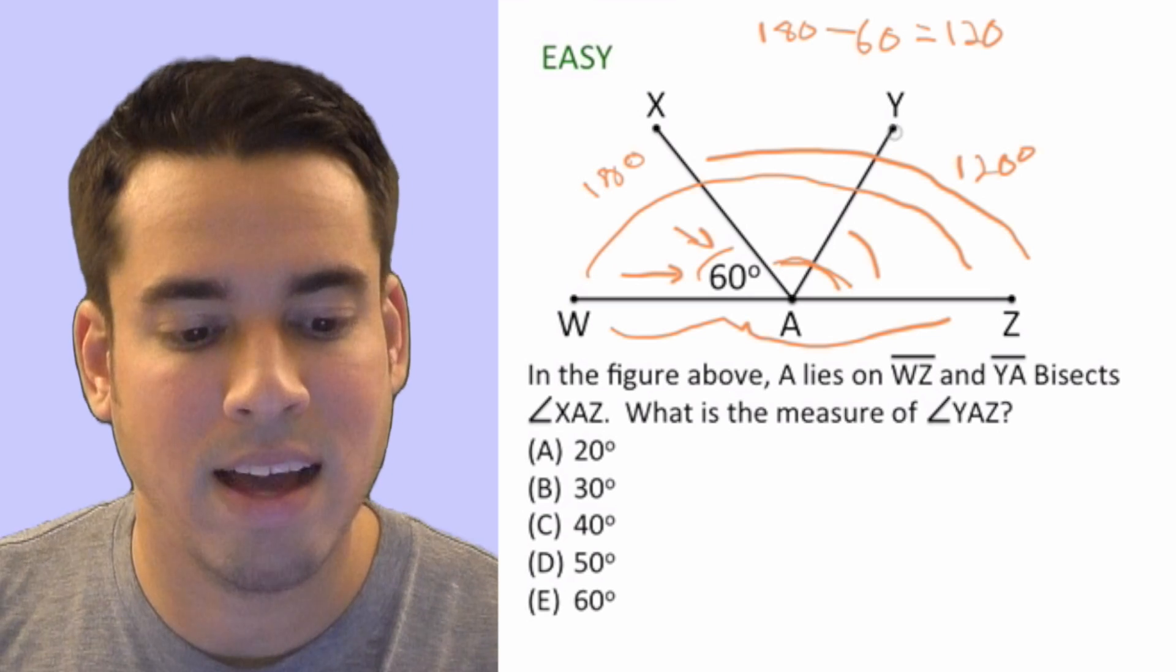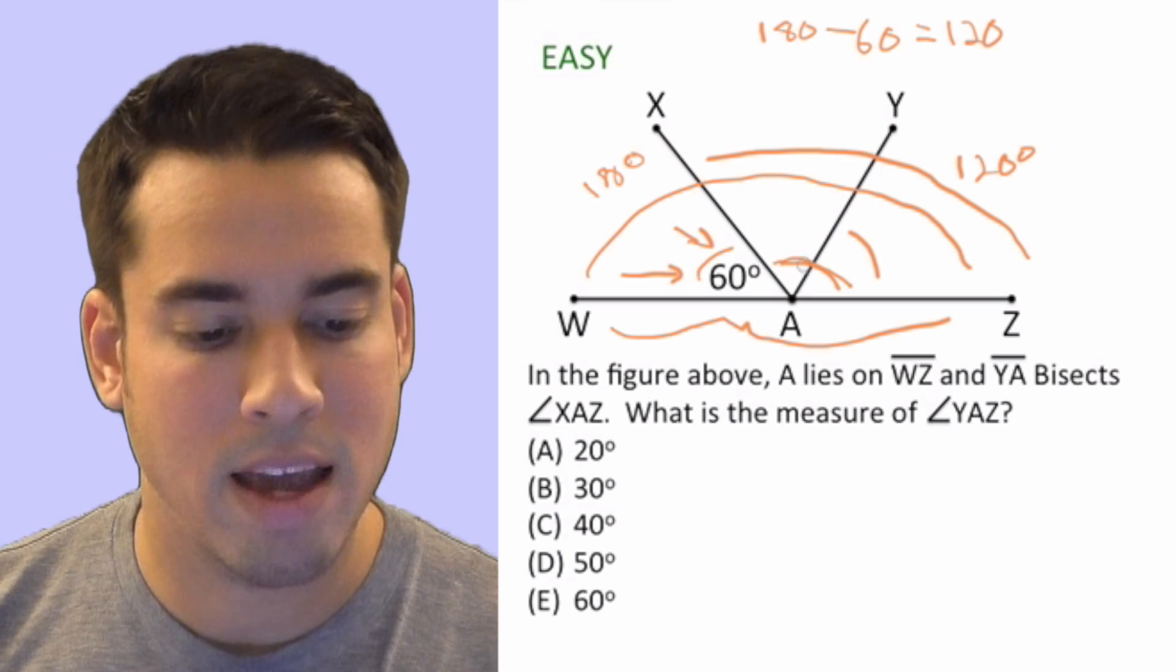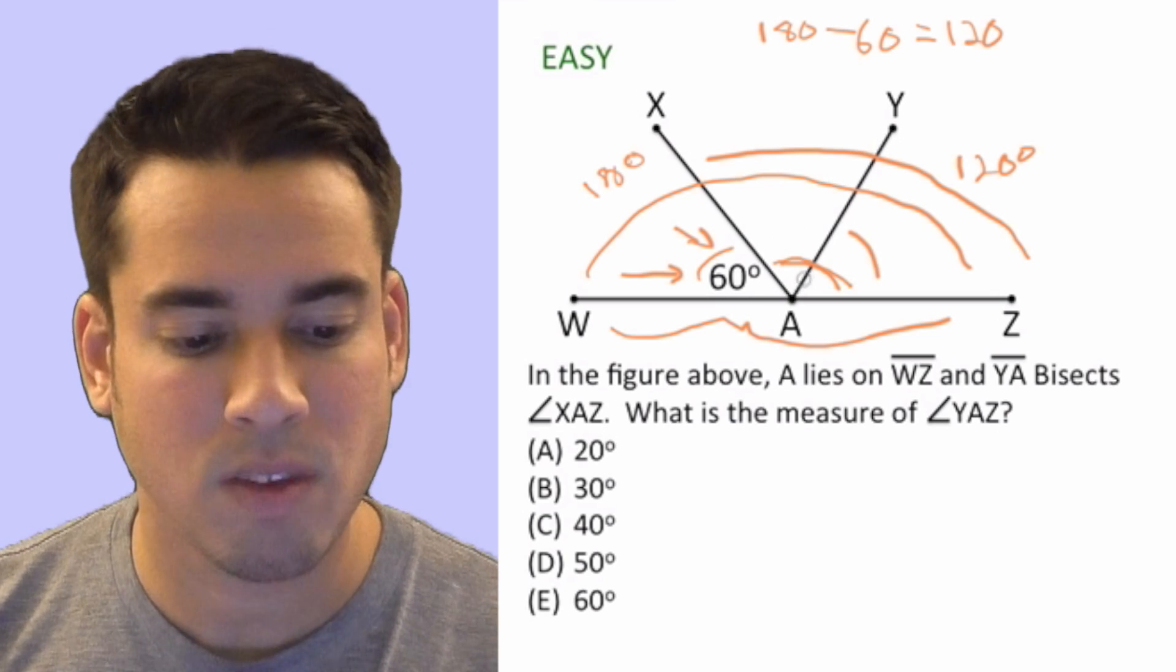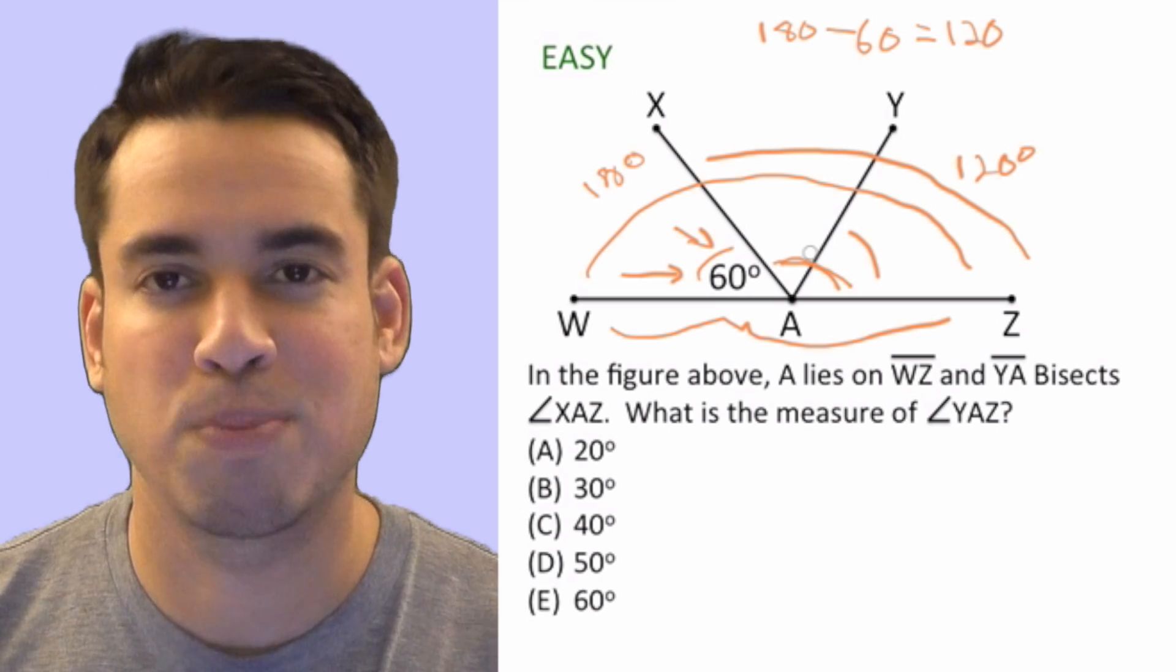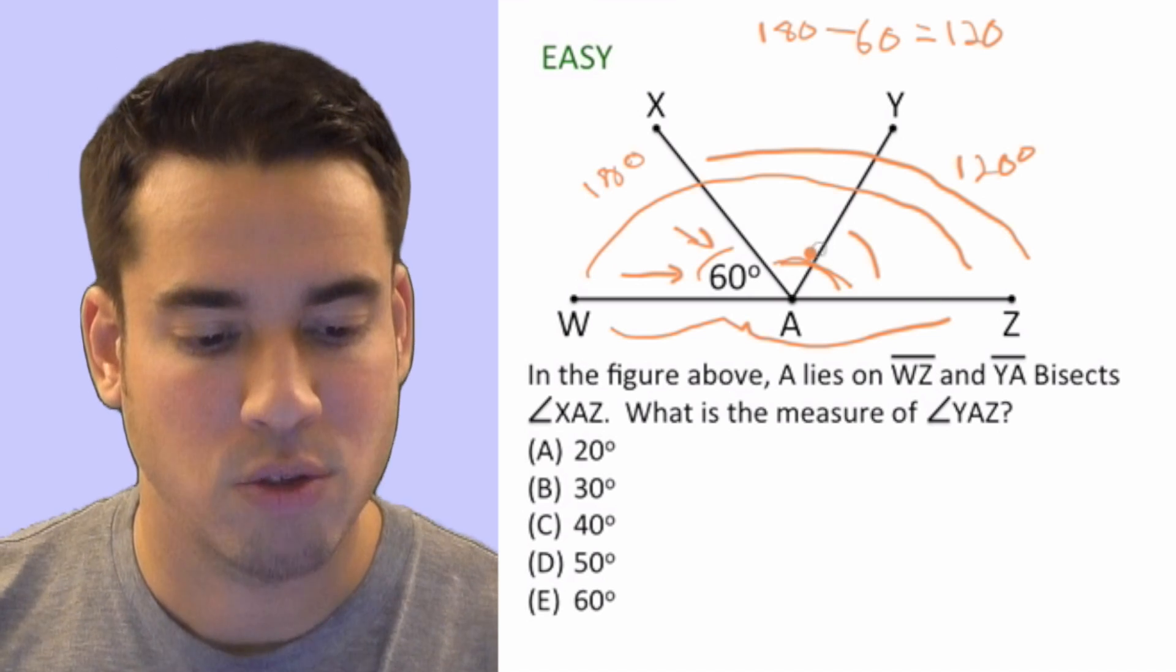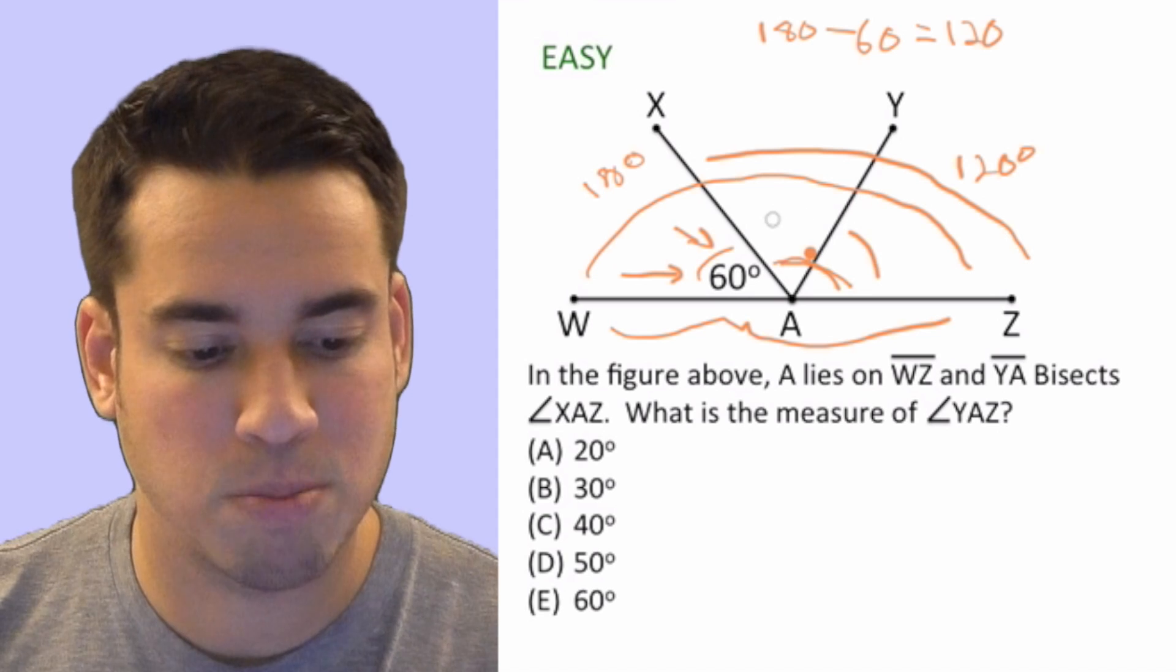And what's the last piece of information that we know? We know that YA bisects this angle. So when you bisect something, you split it into two equal parts. So that means that this 120 is now split in half.